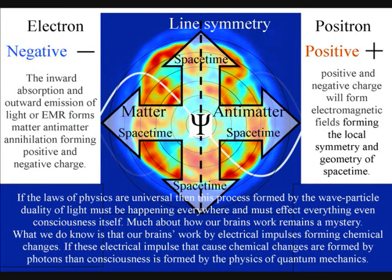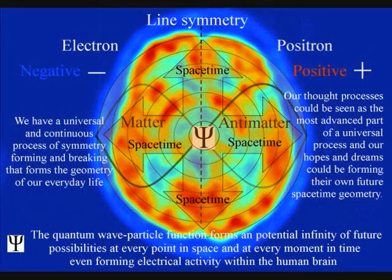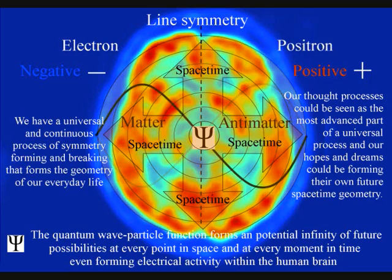The brain works by electrical impulses forming chemical changes, forming the continuous flow of ideas that we feel as consciousness. This electrical activity is universal.